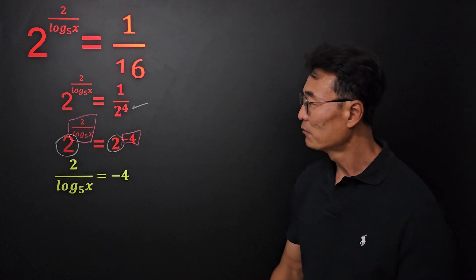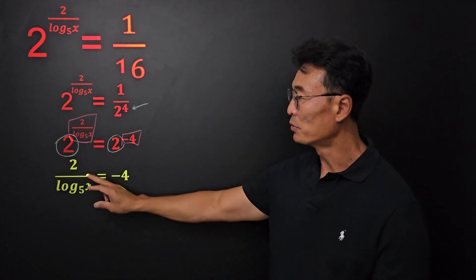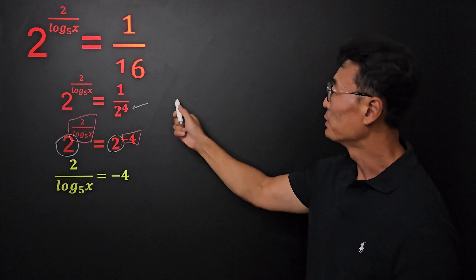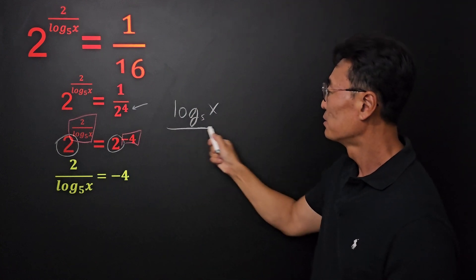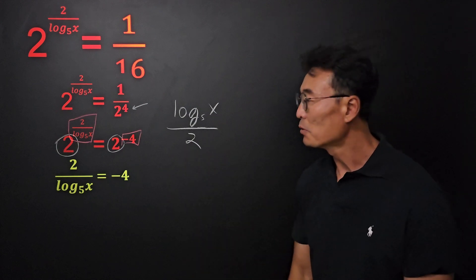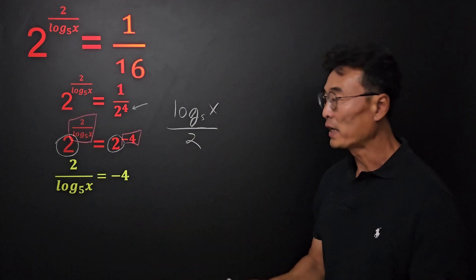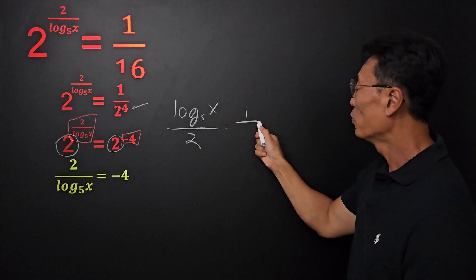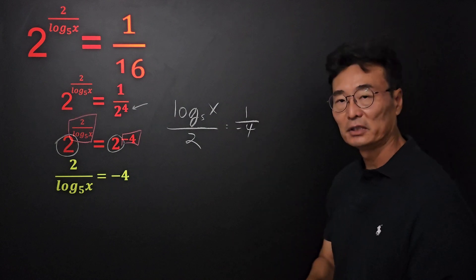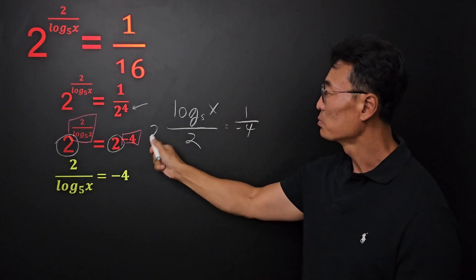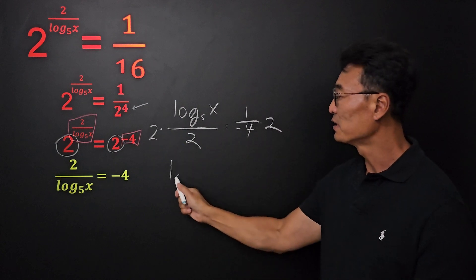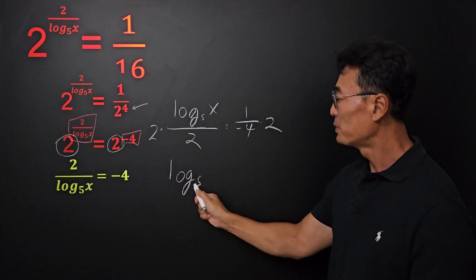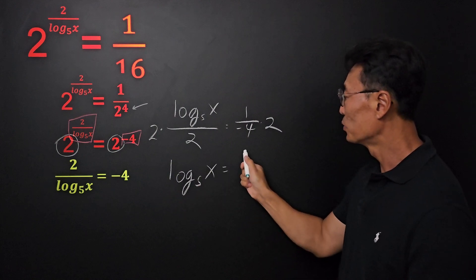First thing I'm going to do is take the reciprocal of the left, which will be log base 5x all over 2, and also take the reciprocal of the right, which will be 1 over negative 4. Then multiply by 2 to get rid of that 2 in the denominator, multiply by 2 on the right side also, leaving us with log of base 5x equals negative 1 half.